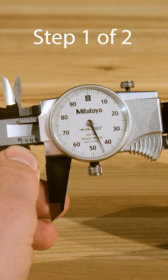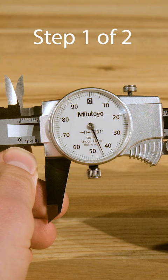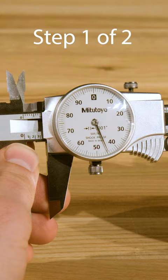Reading the caliper is a two-step process. First, look at the sliding jaw and note the last main scale graduation that it passed. In this case that's the three, so that's 0.3 inches.